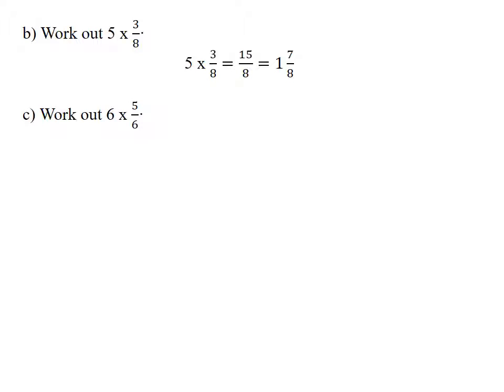Another one: 6 times 5 over 6. Well we can work it out again the same way. 6 times 5 is 30, that's 30 over 6. 30 divided by 6, the answer is 5, and this time there is no fractional part.